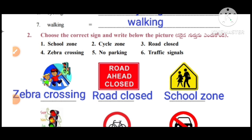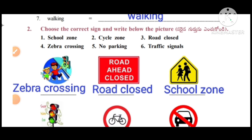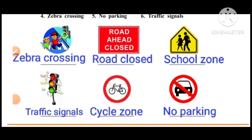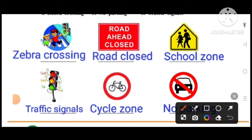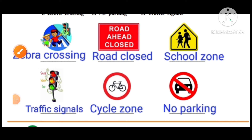Choose the correct sign and write below the picture. First one: zebra crossing. Second one: road closed. Third one: school zone. Fourth one: traffic signals. Next one: cycle zone. And the last one: no parking.